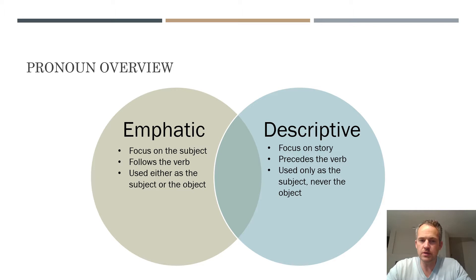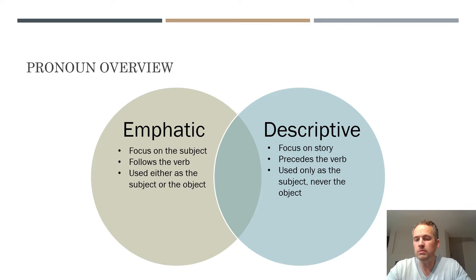The sentence structure for emphatic pronouns is the same as I've covered in a previous video on simple verbs. Emphatic pronouns can be used as either the subject or the object of a sentence, whereas descriptive pronouns can only be used as a subject — they are never the object. That's why I've chosen to do this first video on emphatic pronouns; I'll do another video on descriptive pronouns.